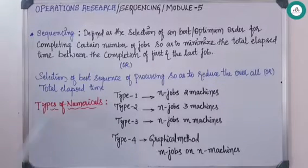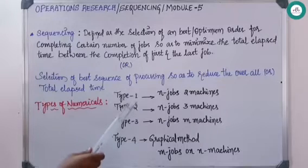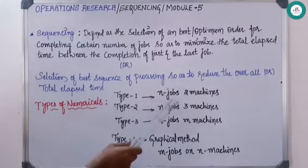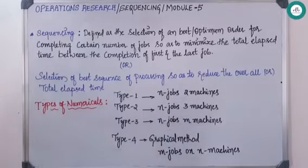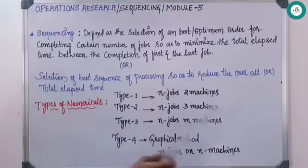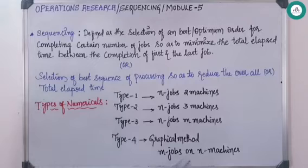Coming to the types of numericals, we have four different types. The first type is n jobs on two machines, the second is n jobs on three machines, the third is n jobs on n number of machines, and the fourth type is a graphical method for n number of jobs on n number of machines.